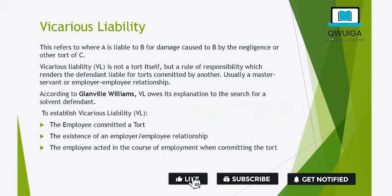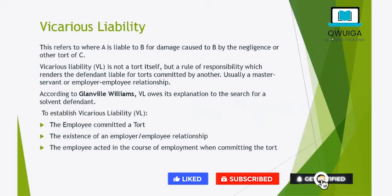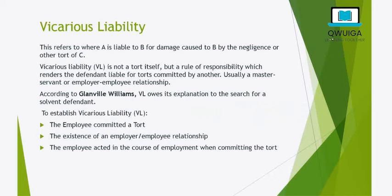According to Glanvey Williams, Vicarious Liability owes its explanation to the search of a solvent defendant — looking for a defendant that is able to bear the burden, shoulder the burden of justification. Because it would be much easier and better to sue a wealthy employer or master rather than the employee or servant who really has nothing much to offer in the way of damages.